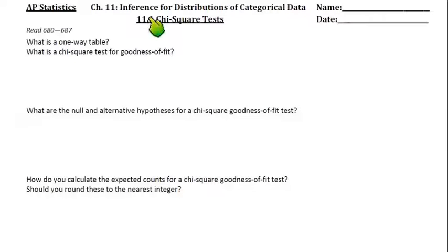So chapter 11 is all about making inferences for categorical data, in particular the distributions of categorical data. We're going to go beyond z-tests and t-tests, and we're going to talk about chi-square tests. So we have this Greek letter chi, looks like a fancy x, and then the square.